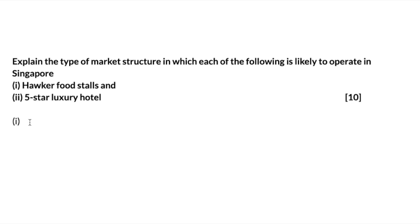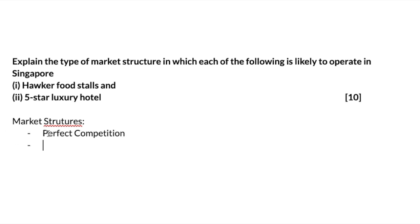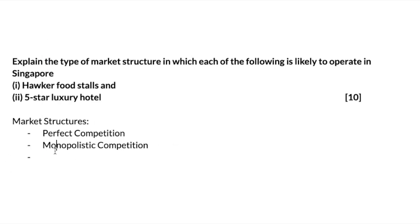The first thing we need to understand is to identify what kind of market structure these actually fall under. Just to recap, the types of market structures you have are: perfect competition, monopolistic competition, oligopolies, and then finally, monopoly. So firstly, we have to identify what a hawker food stall actually falls under.